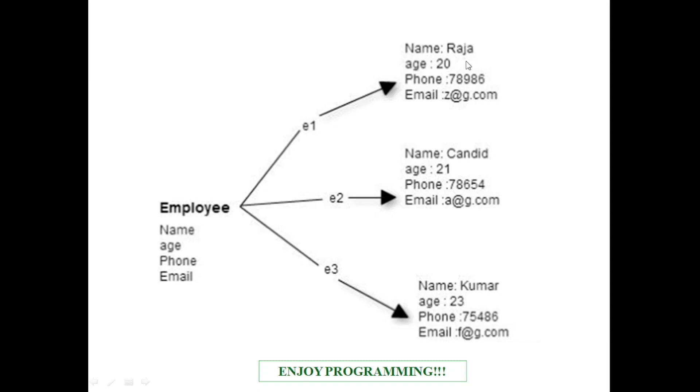Raja is assigned for name. 20 is assigned for age. Phone number is assigned for phone. Likewise, we are assigning values to the properties. And we will also write methods. And this particular set of values is given a unique identifier which is nothing but E1. Now, this E1 is an object.